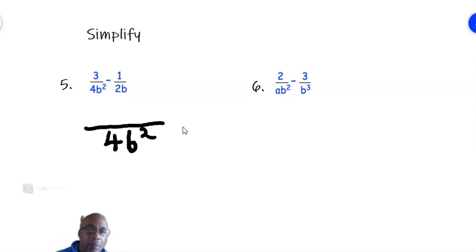First fraction, 4b squared is the denominator. And so we'll just put on the 3. 3 over 4b squared. Minus. 2b into 4b squared. We say 2 into 4 divided numbers. 2 can go into 4 2 times. And b can go into b squared b times. So it is 3 minus 2b over 4b squared.